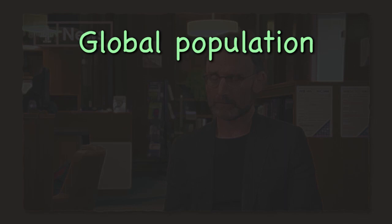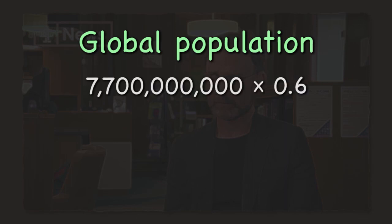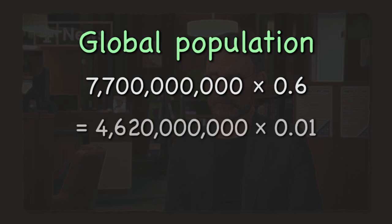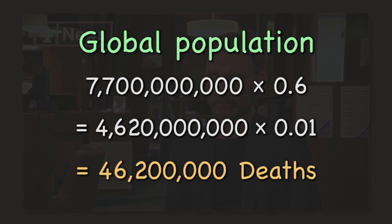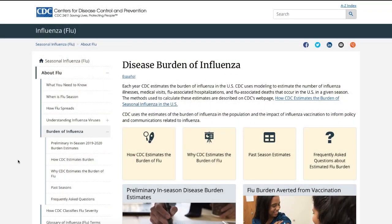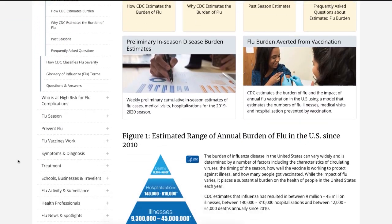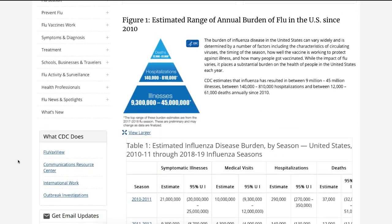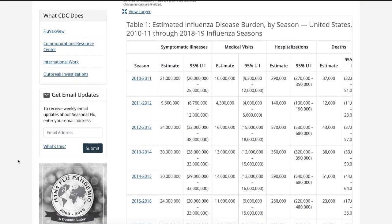Given that the global human population is 7.7 billion, of which 60% is 4.6 billion, Professor Ferguson stated that 1% of 4.6 billion — or 46 million people — could be killed by the Wuhan virus if it is not stopped. For context, let's compare that 1% lethality among all cases to the CDC's data for the seasonal flu.